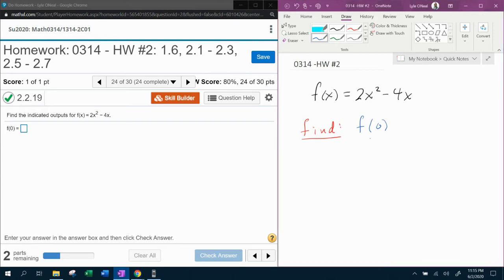And the first function value they want me to find is f of 0. And so you need to understand this is not f times 0. This is f of 0, which is telling me to plug 0 in for every x into f of x. So that's going to be 2 times 0 squared minus 4 times 0. And that's going to be 0 minus 0, which is 0. And so that is our first function value verified.